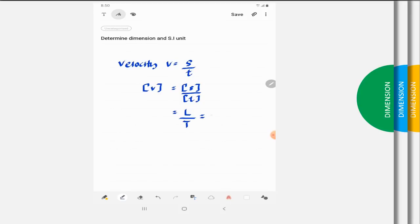Finally, dimension for velocity will be L T to the power of negative 1. And SI unit for velocity will be meter per second.